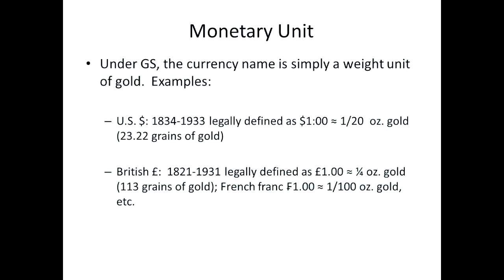The monetary unit under the gold standard — some examples. From 1834 to 1933, the U.S. dollar was legally defined as 23.22 grains of gold, which works out to about one-twentieth of an ounce of gold. So for about a hundred years, that was its legal definition. In Great Britain, from 1821 after the Napoleonic Wars until 1931, the pound was defined as equivalent to about one-quarter of an ounce of gold, and the French franc to about one-hundredth of an ounce. In other words, the dollar was simply a name for a different weight of gold than the pound or the franc.